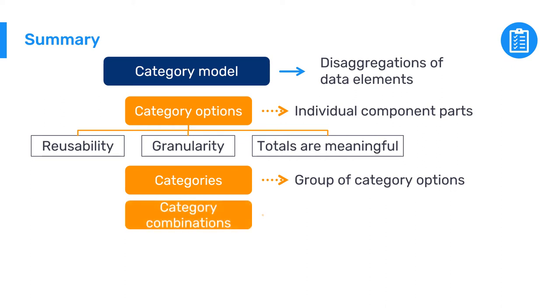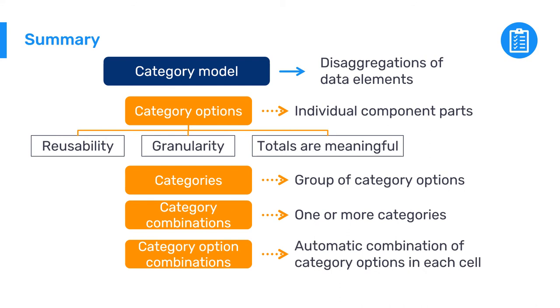Category combinations are made up of one or more categories and are used to assign the categories to data elements. Finally, category option combinations are created automatically by DHIS2. They create the combination of each cell in a reporting table, which provides a lot of flexibility for the end user in terms of viewing the data outputs, and it reduces the number of data elements we have to create.